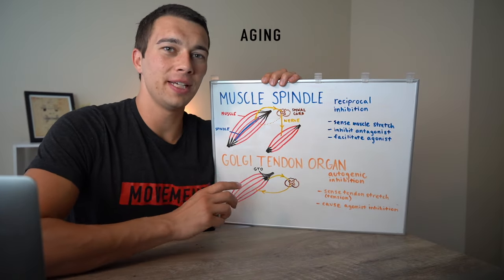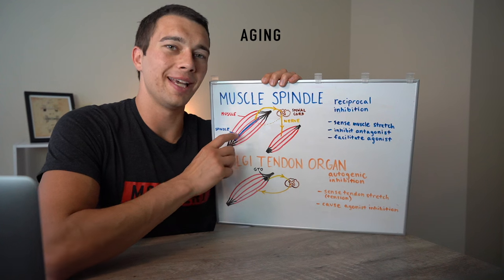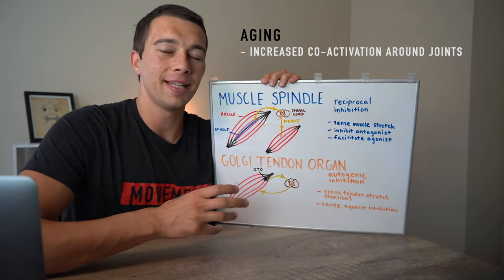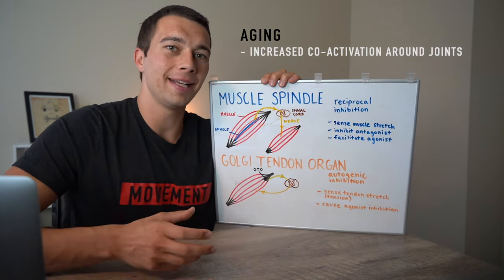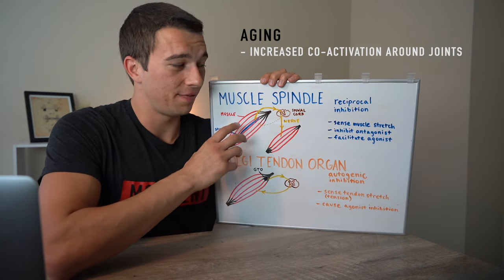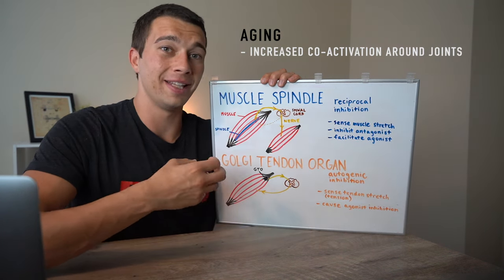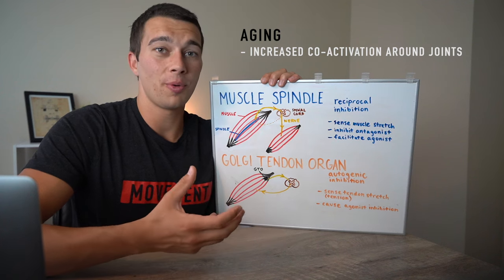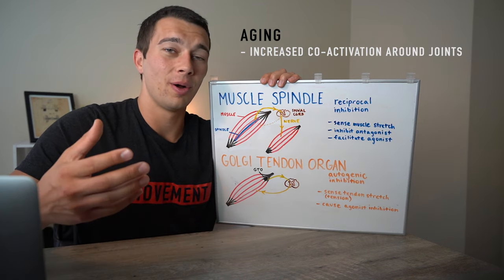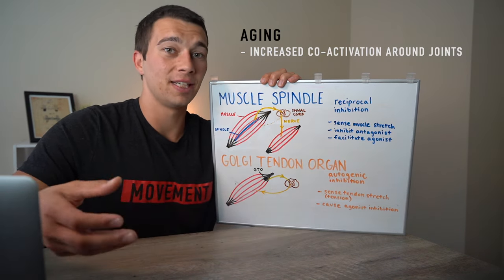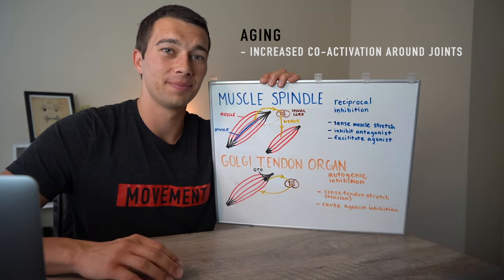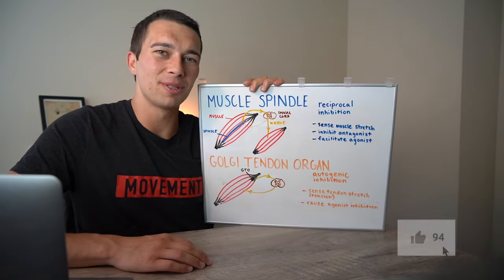One clinical application is that as we age, we actually have more coactivation around joints due to the added need for stability at the joint, which reduces the efficiency and power of the agonist muscles. That's why we want to maintain joint stability throughout our lifetime — so we can maintain agonist force production and keep high levels of activity.